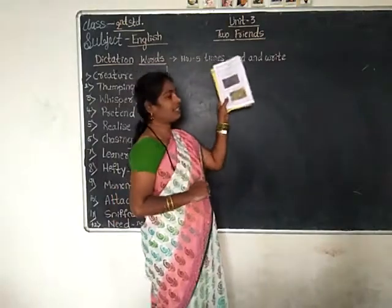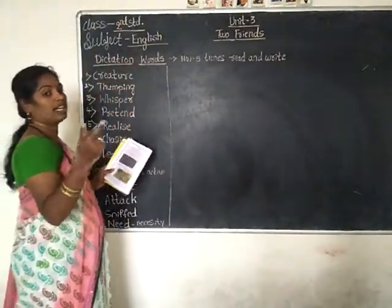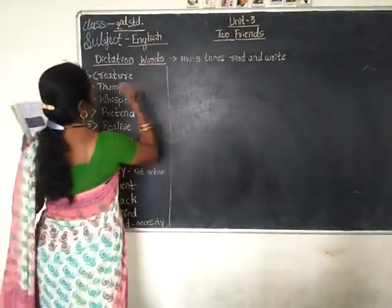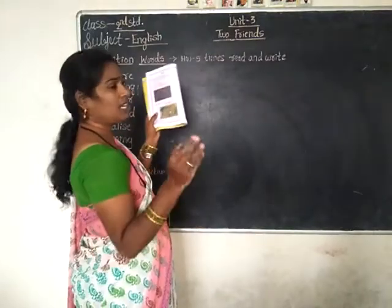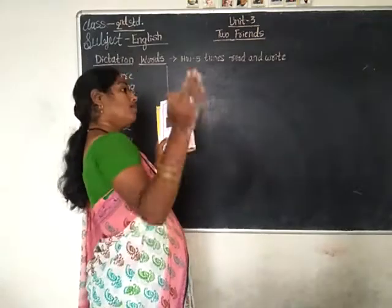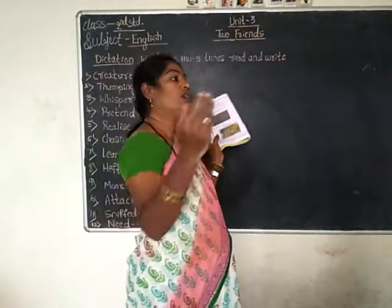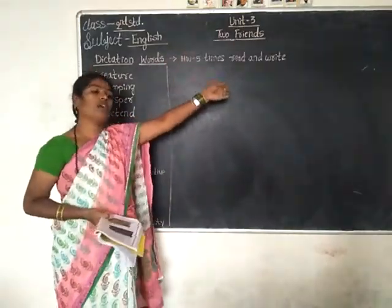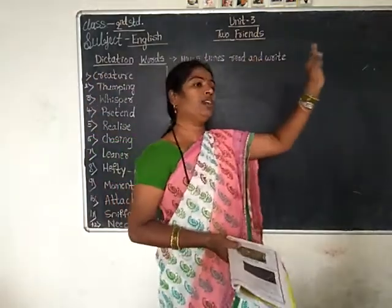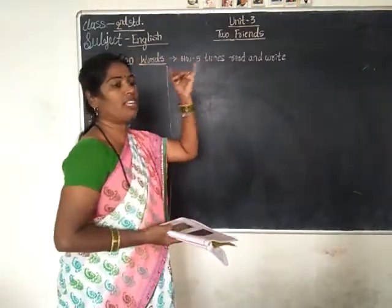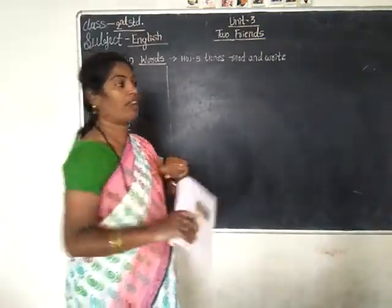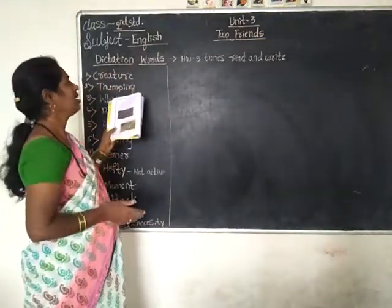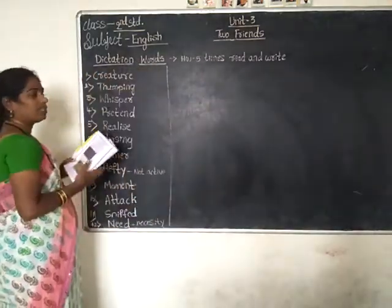In the story, two characters are there: Rohan and Sohan. They are close friends. They are going to Mohan's house, meeting their friend Mohan, and passing through the forest. Rohan is a leaner, weaker boy. Sohan is a fat, hefty boy — not very active. But Rohan is active and knows everything.